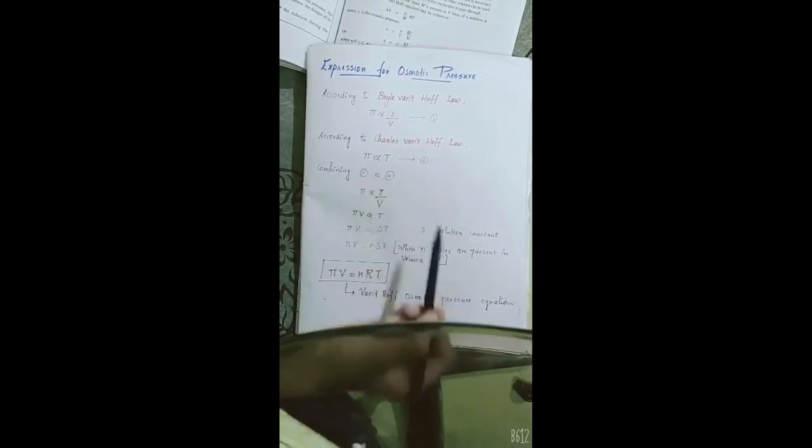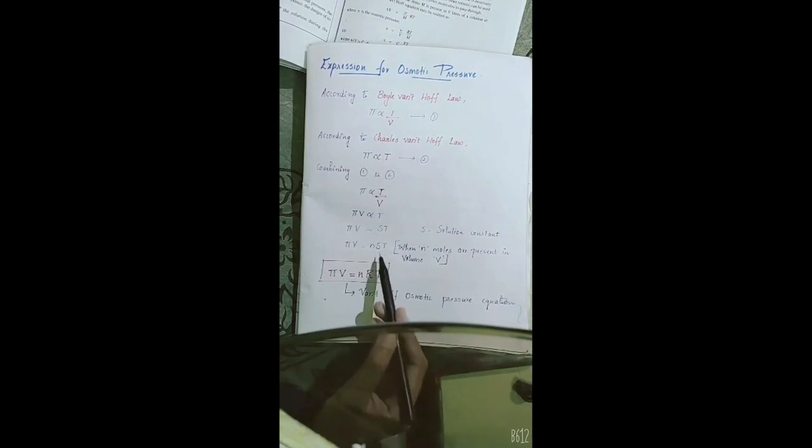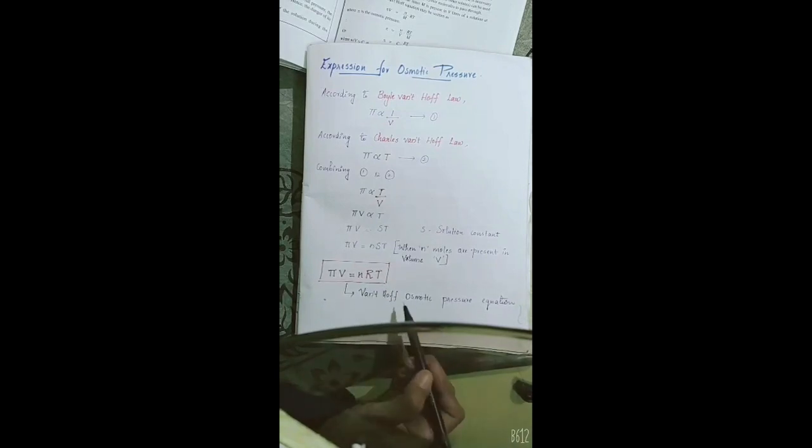Combining the two laws, we get pi directly proportional to T/V, or equivalently pi·V is directly proportional to T. Introducing a proportionality constant S, the solution constant, we write pi·V = ST. Including n moles, this becomes pi·V = nST. Since S is analogous to the gas constant R, we replace S with R to get the van't Hoff osmotic pressure equation: pi·V = nRT.